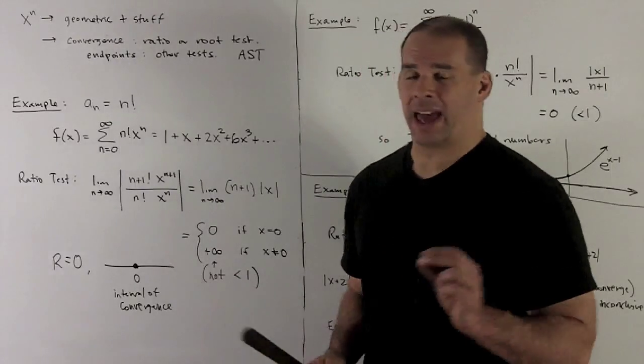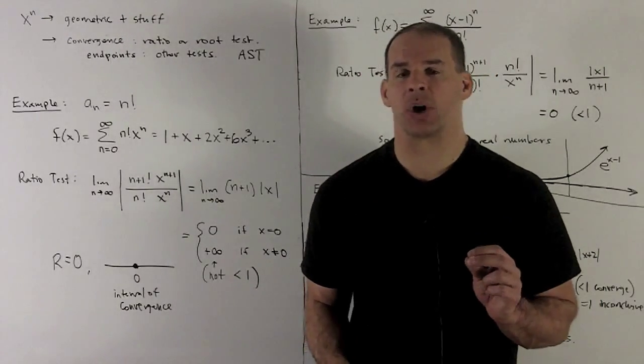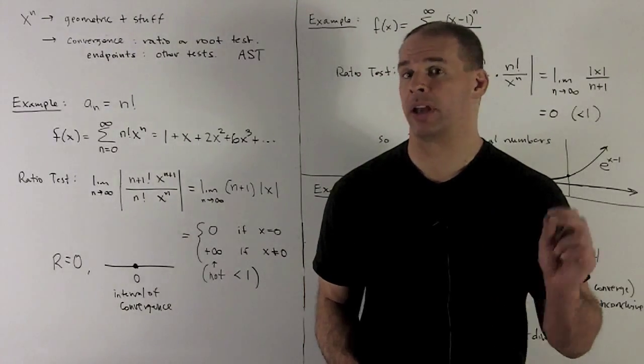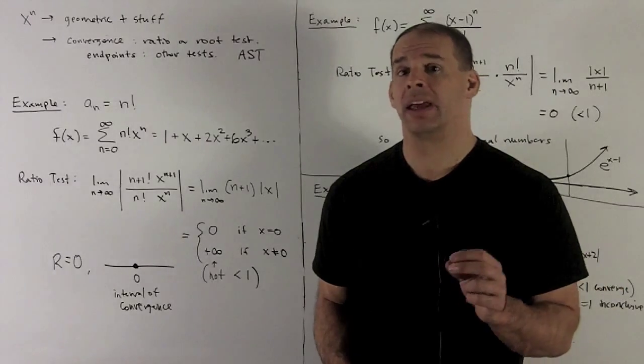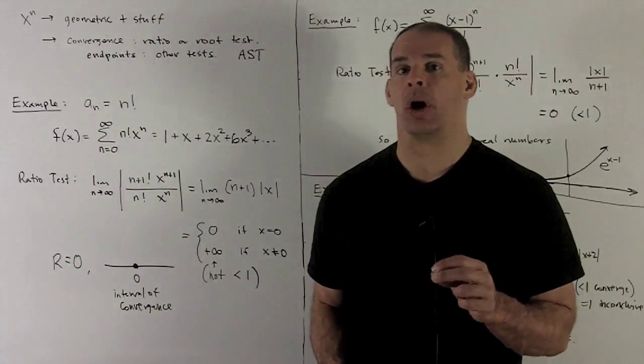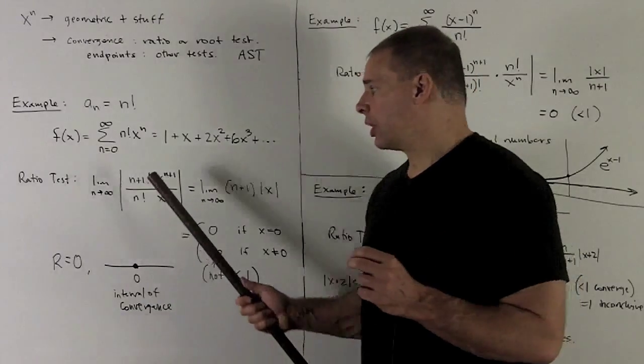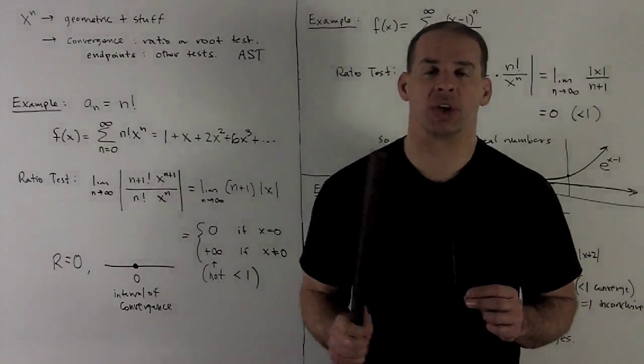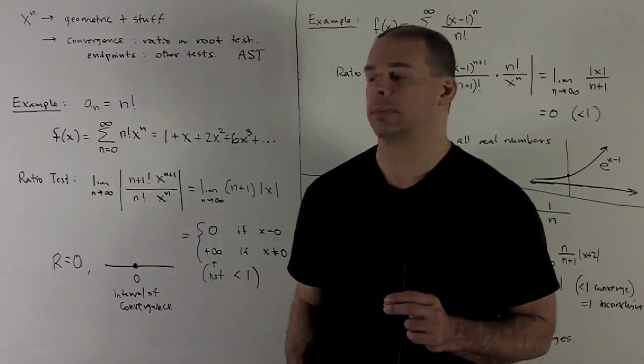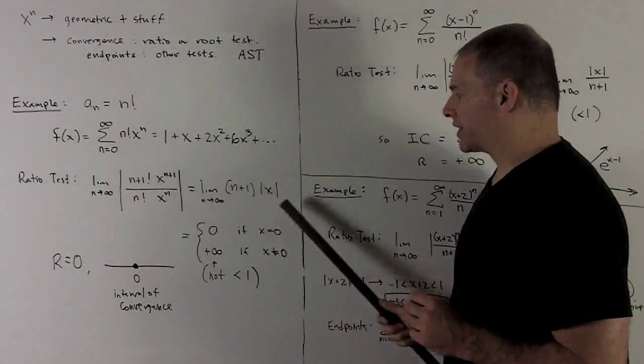Then over here, remember, n factorial and (n+1) factorial are just gotten by multiplying all the numbers from one through n and one through n plus one. So when we take this quotient here, you're going to see that everything's going to go away except the n plus one. So we're going to take the limit of this guy.